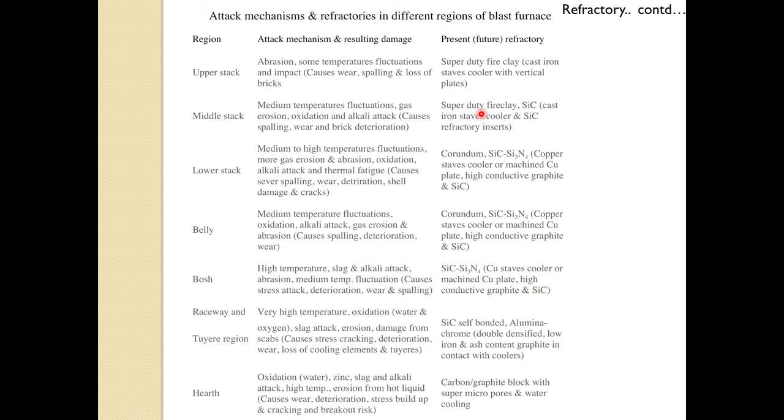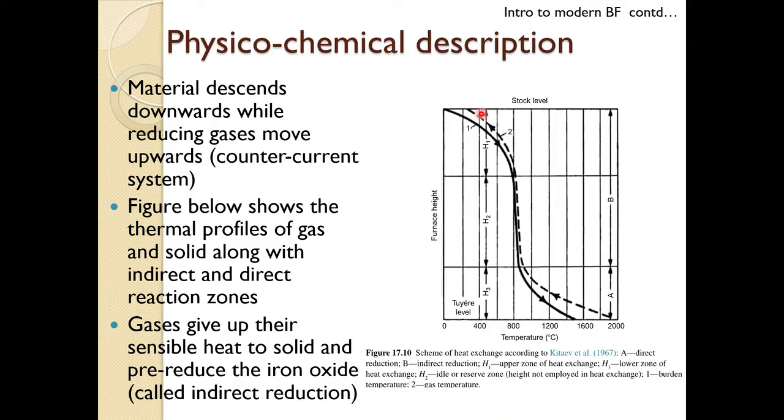It is very important that if refractories fail in one region, production is affected. The life of refractories should be as high as possible to protect all materials. These represent the mechanical aspects discussed so far. Now we will describe the physicochemical aspects of what is happening inside the blast furnace.